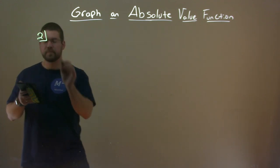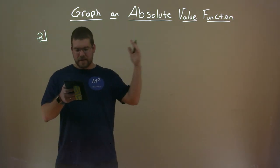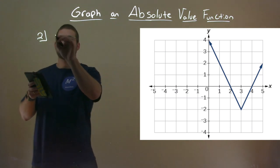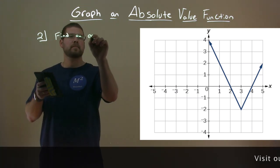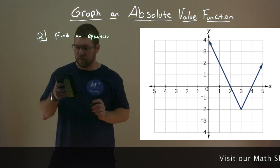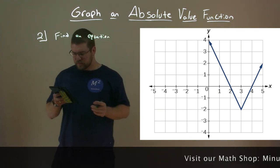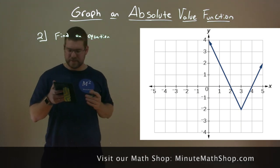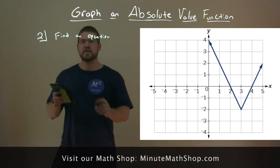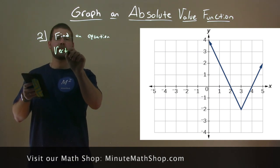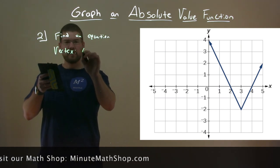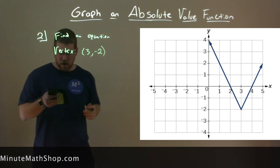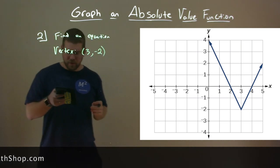So let's go graph another example here. We're given this graph right there. And we want to find an equation for that function. Well, there's a few things we need to kind of go about and see. What's the vertex? The vertex here is (3, -2).